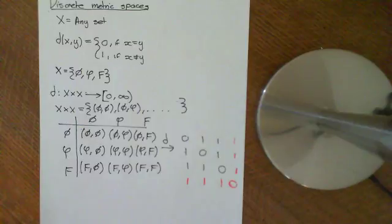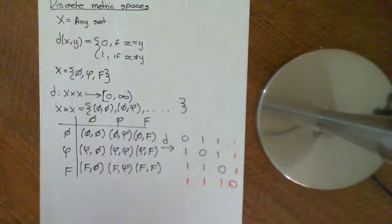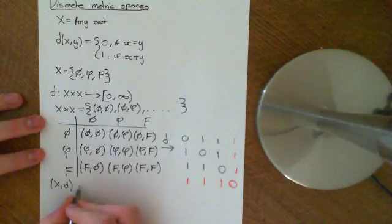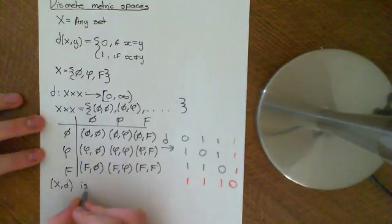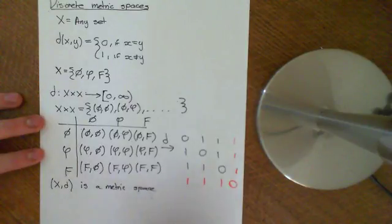So let's see why this is a metric space — let's verify that a set with this discrete metric ascribed on it, together with the metric, is indeed a metric space. Let's check that it obeys all of the axioms of a metric space.